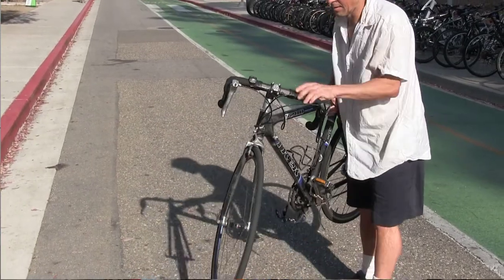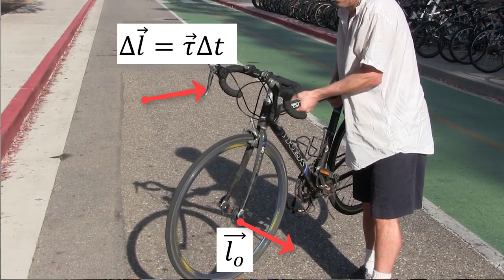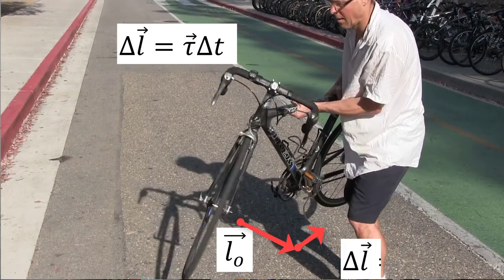You can see this very clearly with my bicycle and the spinning wheel. As I put a torque on the stem, you see the front wheel rotate.